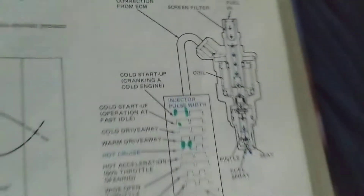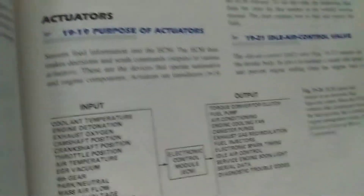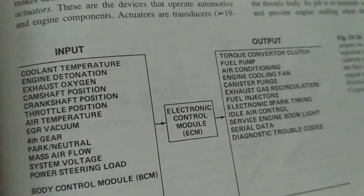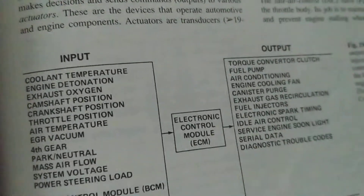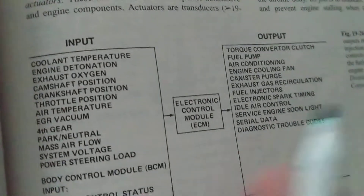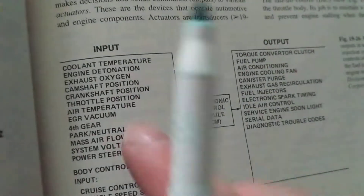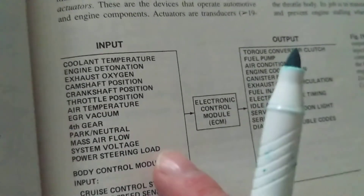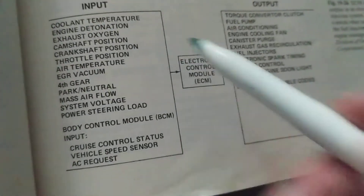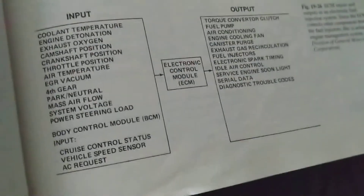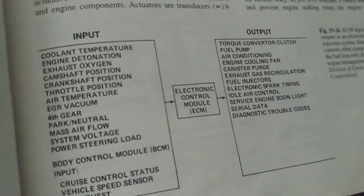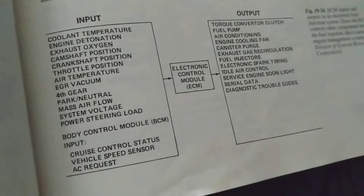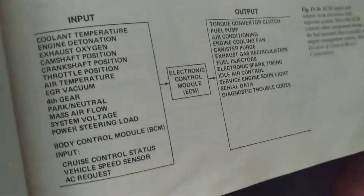Let's look at the computer like we did before — remember inputs and outputs. This applies to any computer module: Toyotas, Hondas, Highlanders, Sonatas — the concept is always the same. Inputs to computer modules are sensors, but not only sensors. I learned automotive over 20 years ago from this textbook — 'Automotive Technology: A Systems Approach' — it's quite expensive, seven or eight hundred pages.